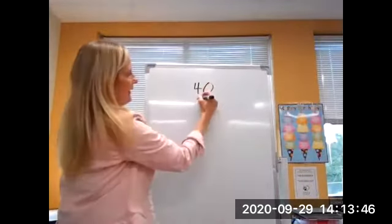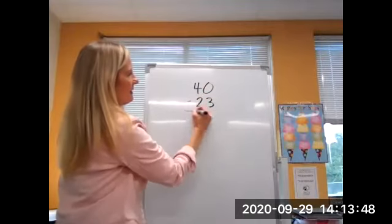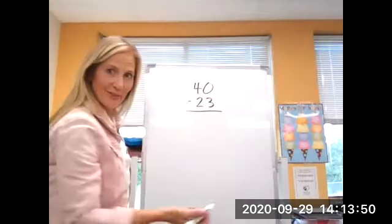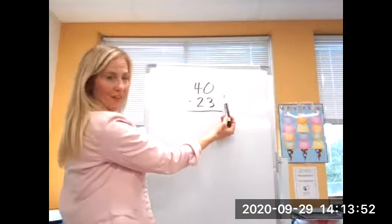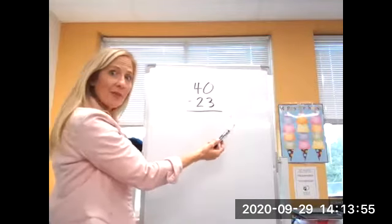Let's take the number 40 takeaway 23. So you know how to do this. Ones column first, right? There's no ones. Takeaway three ones. Can't do it.